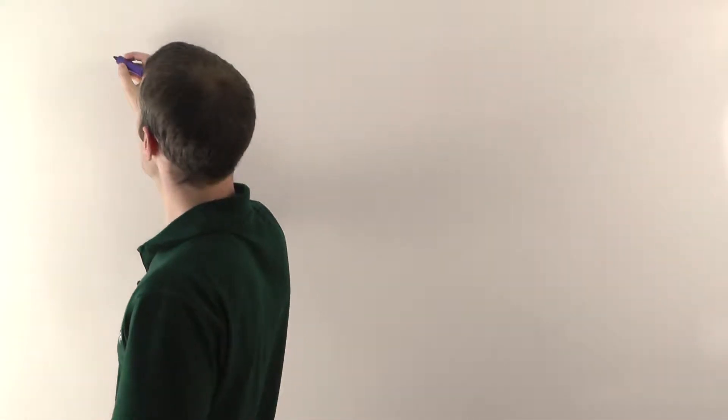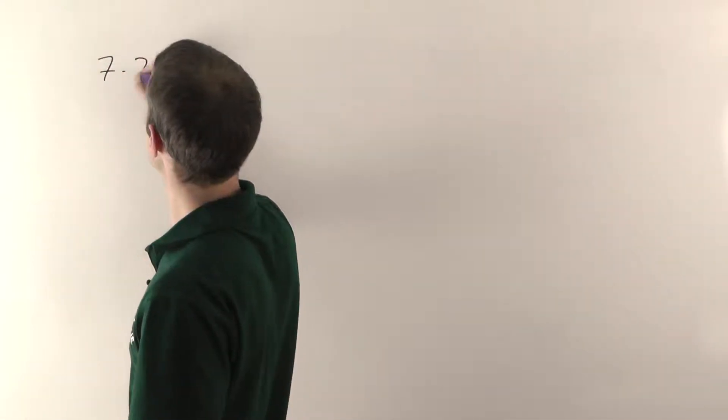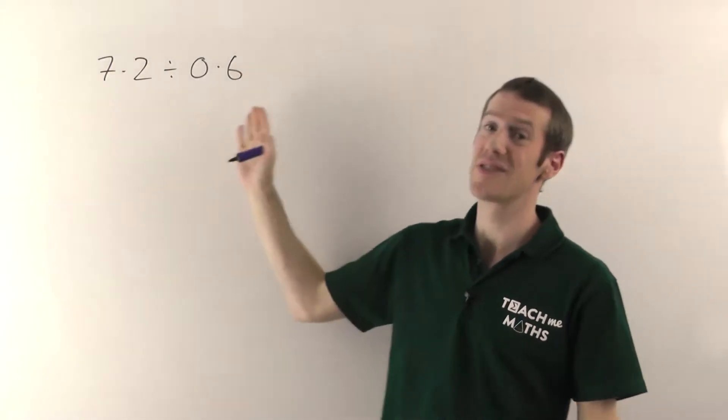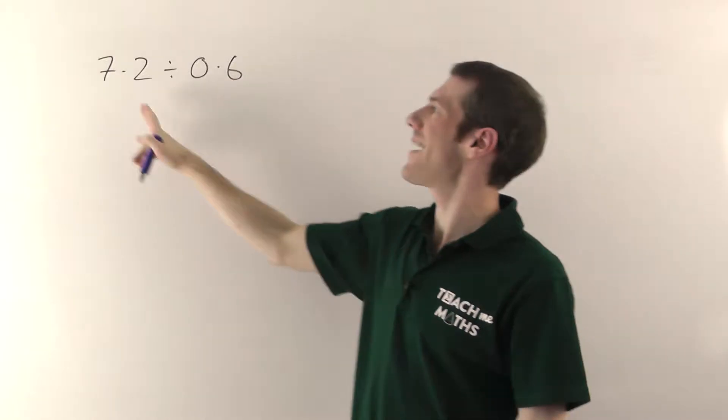Now if you take two decimal numbers, we'll do 7.2 and divide it by 0.6. This is the sort of thing we're talking about. How many times does that fit into that?